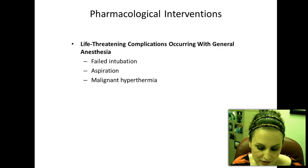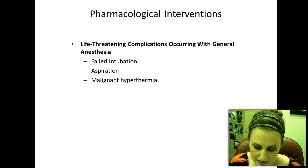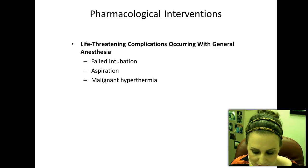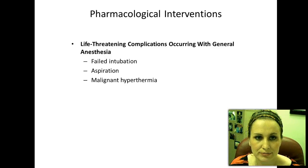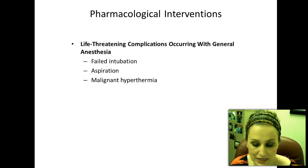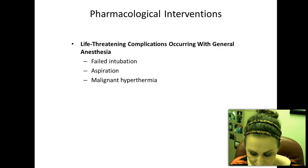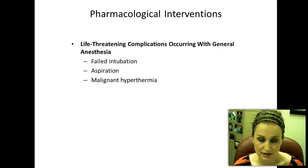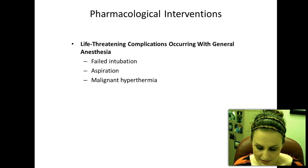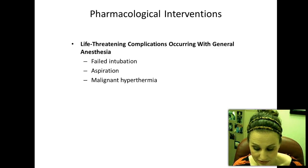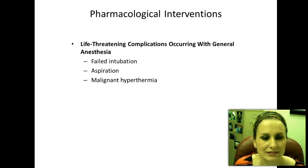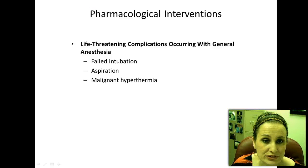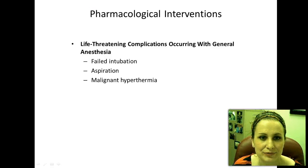Malignant hyperthermia is a very rare but potentially life-threatening complication of general anesthesia. It's an inherited condition that causes sustained muscle contractions in the presence of certain anesthesia agents. A thorough history is needed to identify women at risk. Early signs include muscle rigidity, tachycardia, irregular heartbeats, decreased oxygen saturation, and cyanosis — with body temperature rapidly increasing to lethal levels as a late sign. General anesthesia is rarely used, but when it is, these complications can be life-threatening.